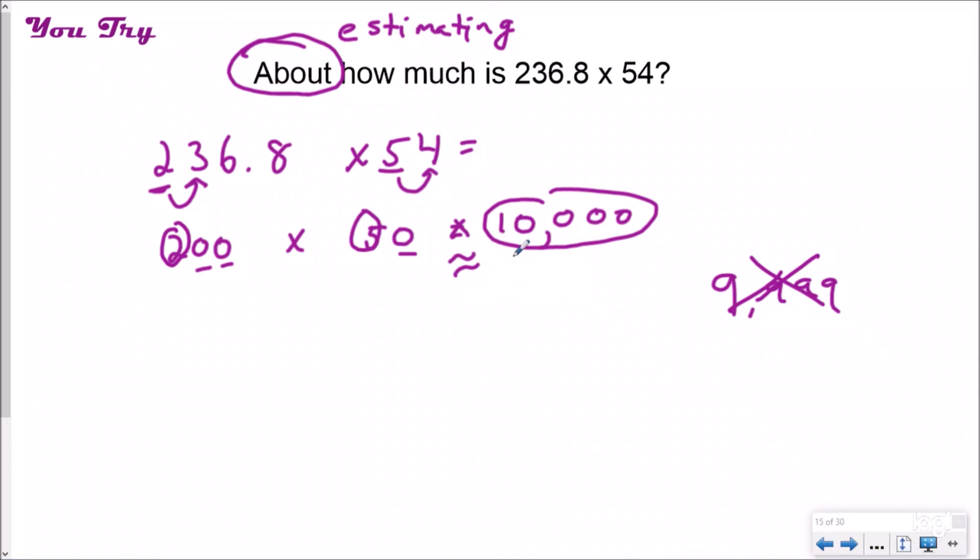Really, you could just use your estimate to check your answer. But as you get better and better at math, you want to start thinking about those things and realizing that your answer, your product, when you solve it exactly, should be bigger than 10,000.